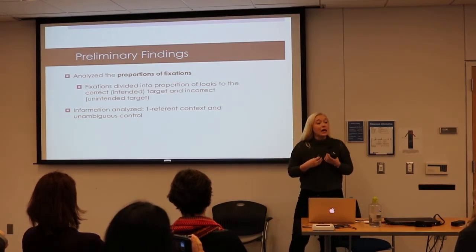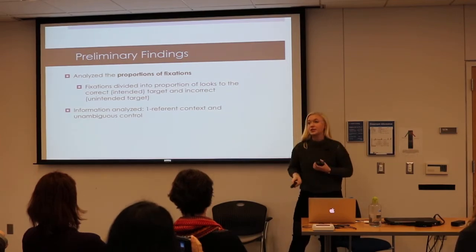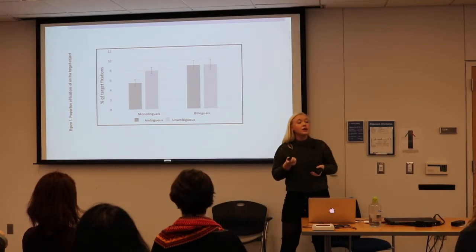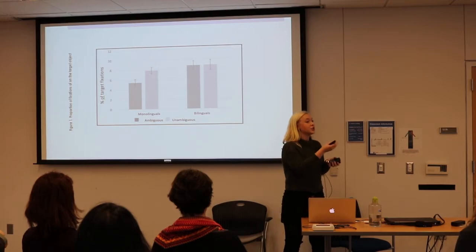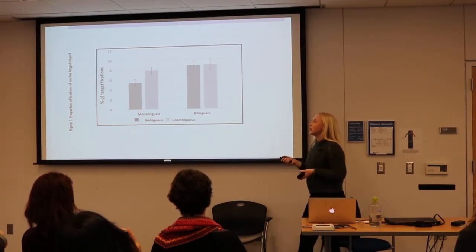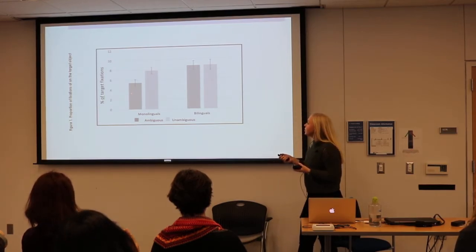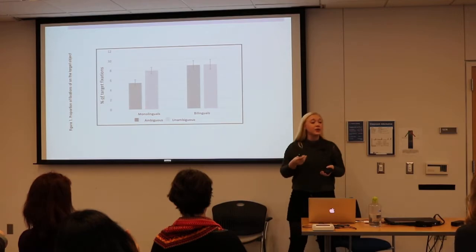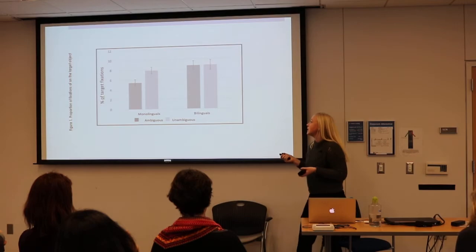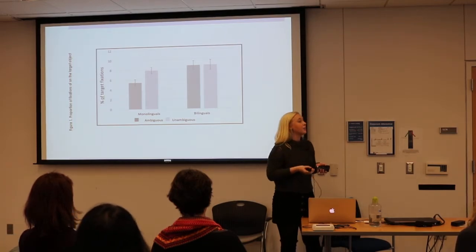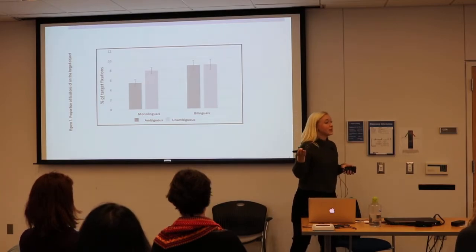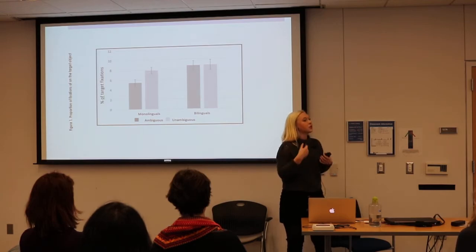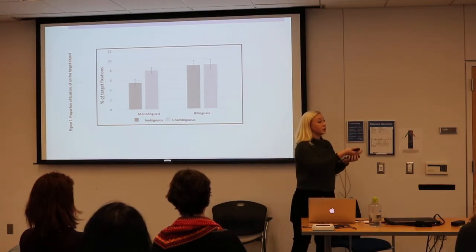The data analyzed so far covers the one-referent context and the unambiguous control. For monolinguals, Spanish speakers were very similar to monolingual English speakers. The percent of correct target fixations was lower in ambiguous sentences than in unambiguous sentences, meaning participants were also looking to incorrect destinations in ambiguous sentences — showing a little bit of trouble resolving syntactic ambiguity, consistent with English monolingual participants.